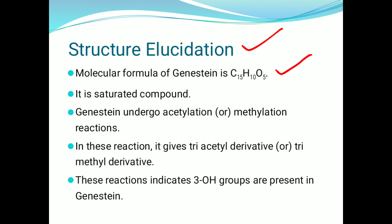Genistein is taken as a saturated compound because it does not decolorize the color of KMnO4 solution or bromine water solution. Its melting point value is 215 to 217 degrees centigrade.